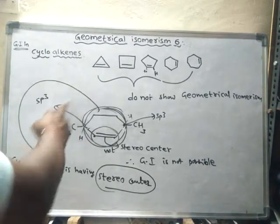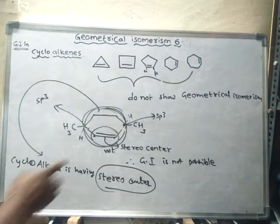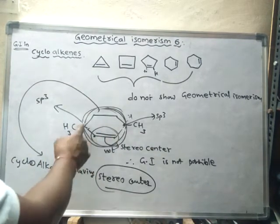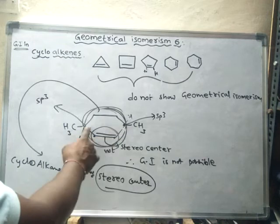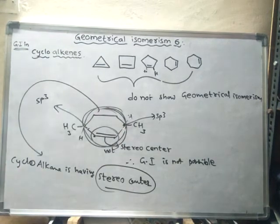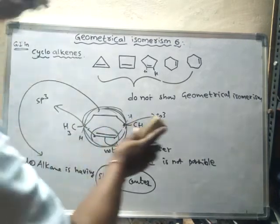That means this compound does have geometrical isomerism, but not due to the double bond in the six-membered ring. Rather, geometrical isomerism is possible between the sp3 carbons of the cycloalkane part.